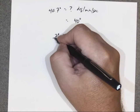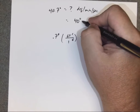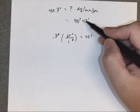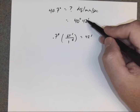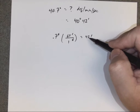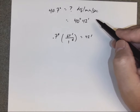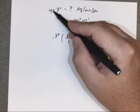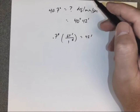So 40.7 degrees converts to 40 degrees and 42 minutes. Since 42 is a whole number, there are no remaining seconds to convert. We're done. 40.7 degrees equals 40 degrees, 42 minutes.